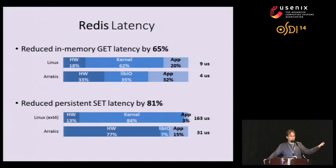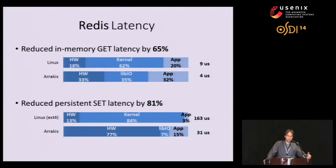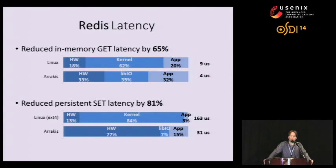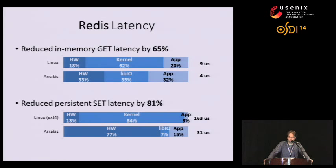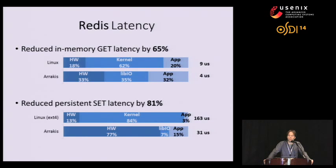For Redis latency: GET operations involve only the Arrakis network stack, not persistent data structures. We reduced the latency of in-memory GET operations by 65% versus Linux — from 9 microseconds down to 4 microseconds — and in the breakdown we now spend just 35% of time in our library I/O stack versus 62% in Linux. Using both the Arrakis network stack and persistent data structures, we reduced the latency of persistent SET operations by 81% — from 163 microseconds on Linux with ext4 down to 31 microseconds in Arrakis, very close to the latency provided by our hardware devices. In the breakdown, only 7% of time is spent in our library I/O stack.